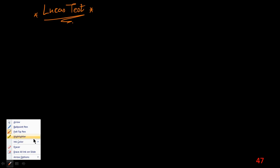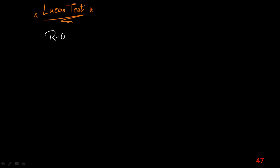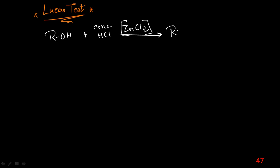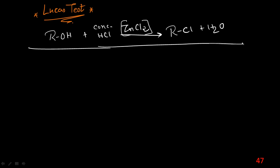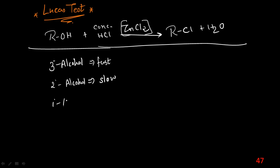Next is the Lucas test. When any alcohol is reacted with concentrated HCl in the presence of ZnCl2, we get RCl and H2O. This reaction is fastest for tertiary alcohol, slow for secondary alcohol, and difficult for primary alcohol.